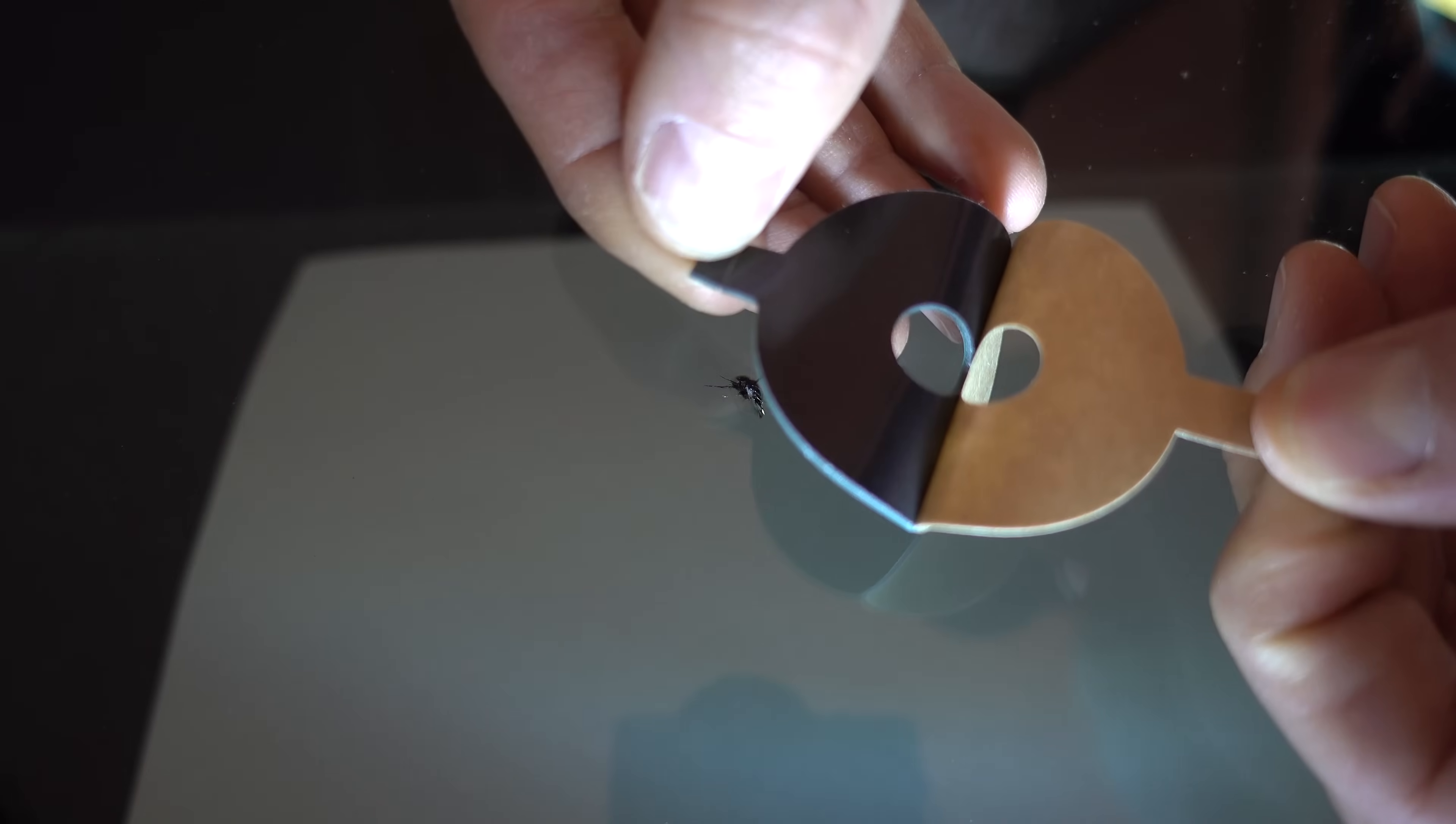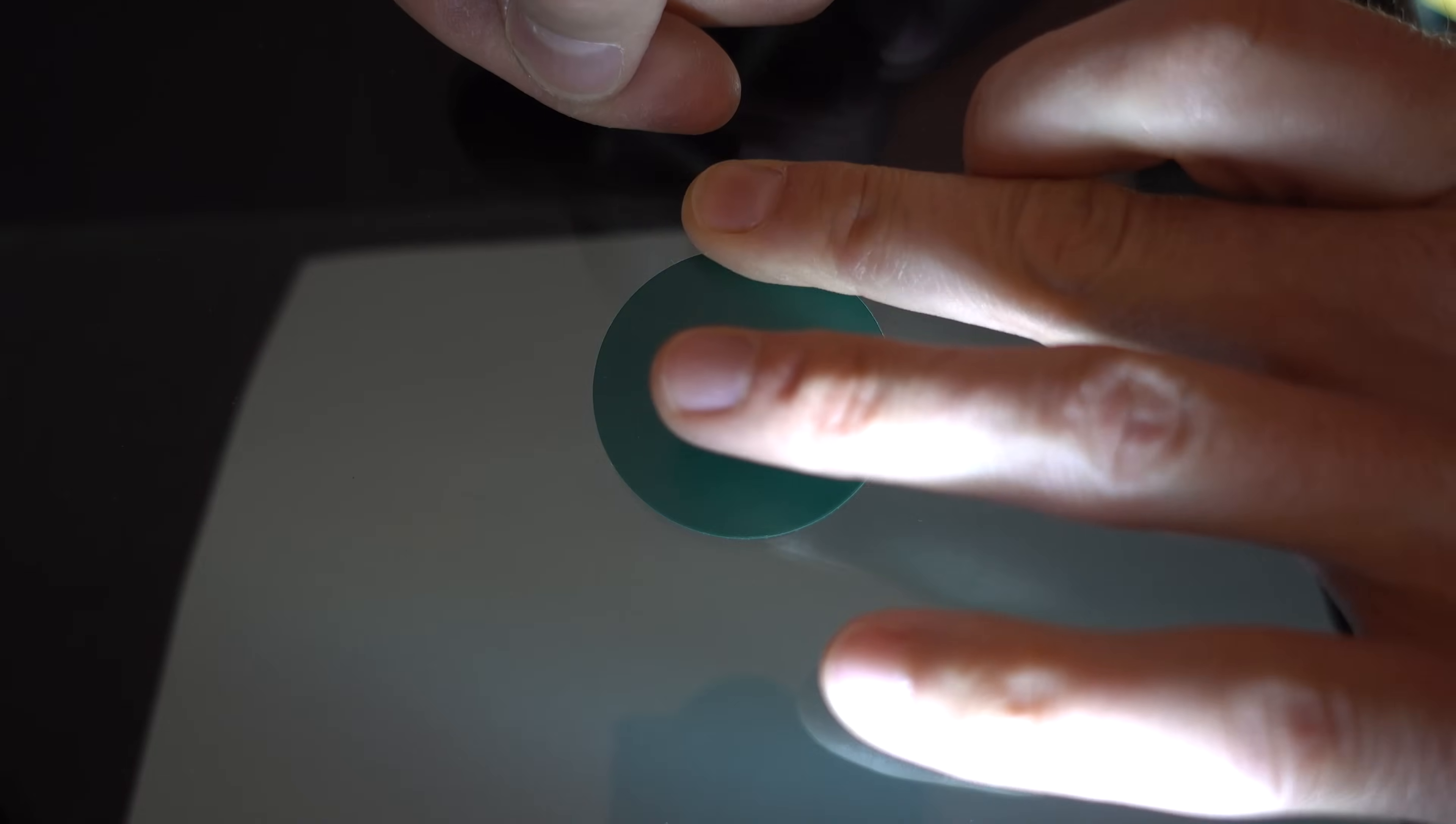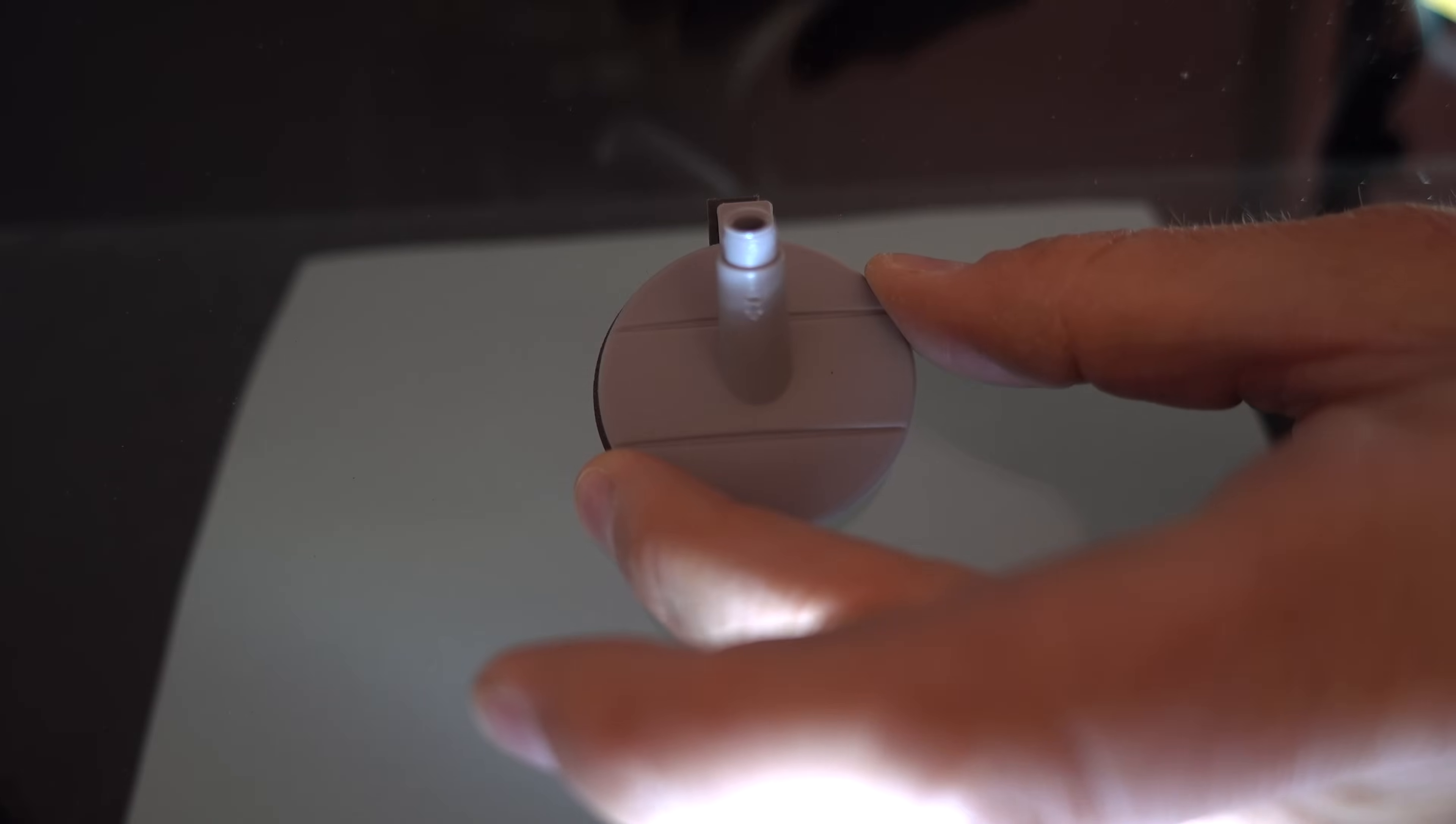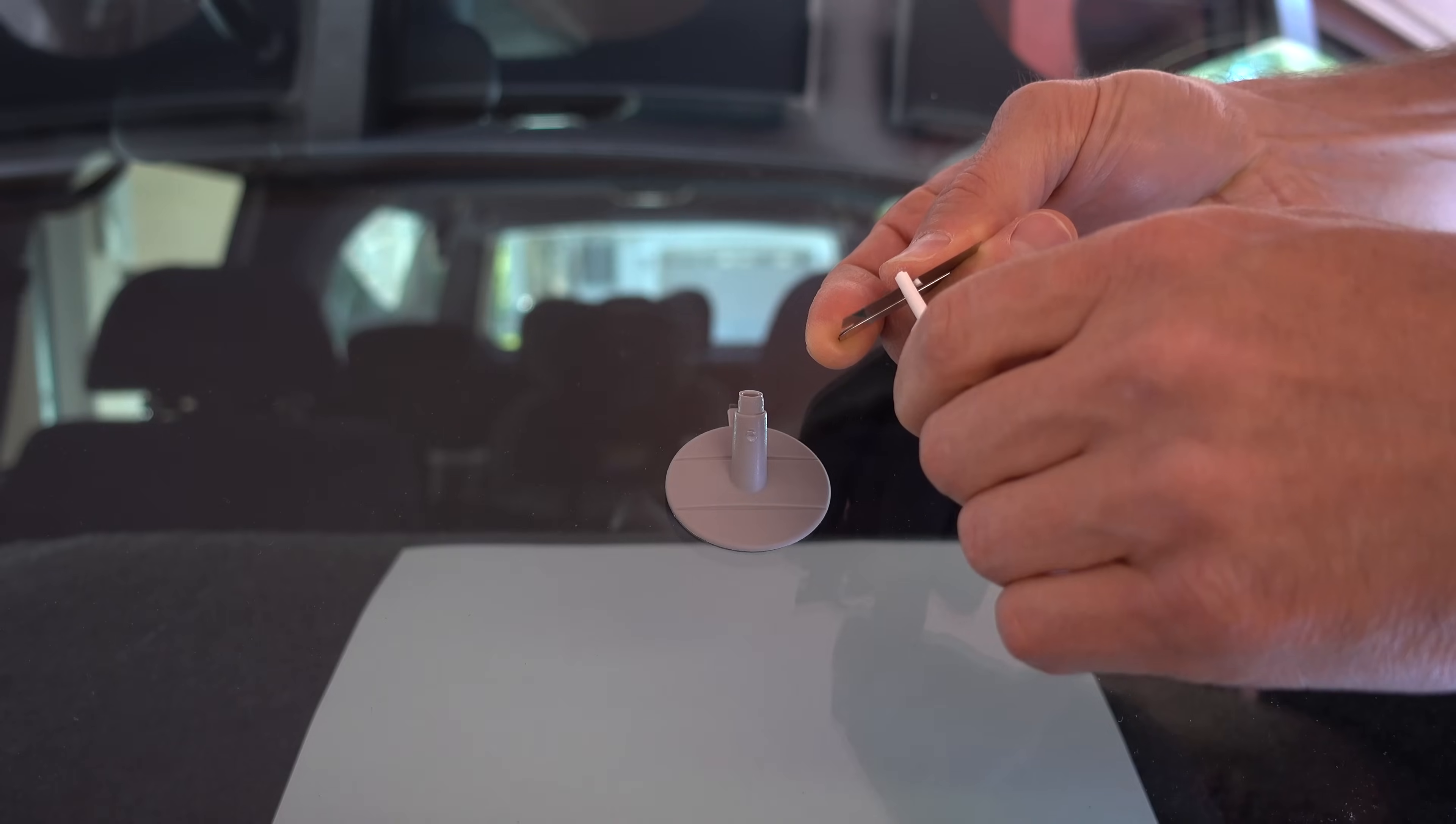Peel one side of the adhesive backing off and stick it to the glass, making sure to keep the pit of the crack centered. Peel the top layer off and stick the bowl to it, making sure the tabs line up. By the way, you will want to make sure those tabs are in the upward position.